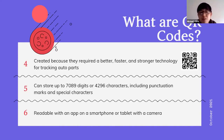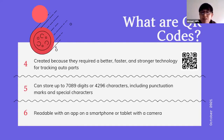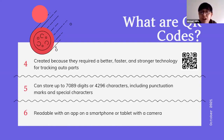A QR code is readable with an app on a smartphone or tablet with a camera. Usually on a new smartphone, there should be a camera app, and within the camera app there should be an option for scanning QR codes. Since there are many manufacturers of smartphones, they might be a little bit different — certain ones have the option to select it, and certain ones don't, but they still have the ability to scan a QR code.